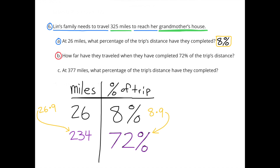Part B: How far have they traveled when they have completed 72% of the trip's distance? I created a chart with miles on the left and percent of the trip on the right. After 26 miles they've completed 8% of the trip. I know that 8 times 9 equals 72, so 26 times 9 will give me the number of miles traveled after 72% of the trip. 26 times 9 equals 234, so 72% of the trip is 234 miles.